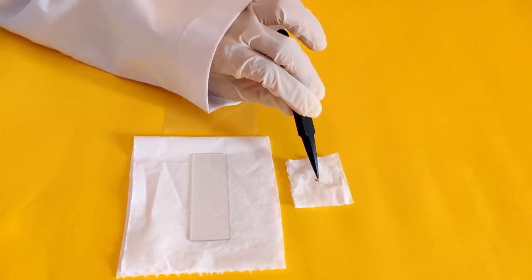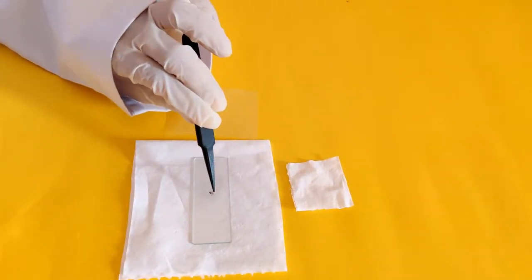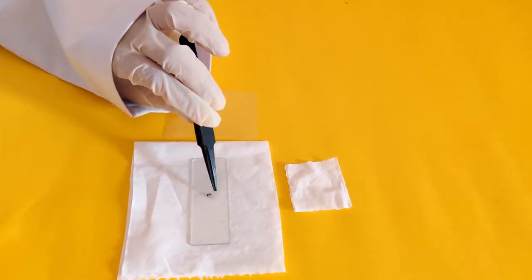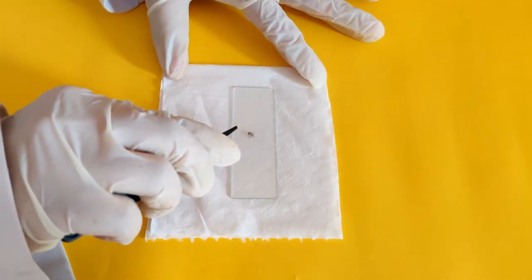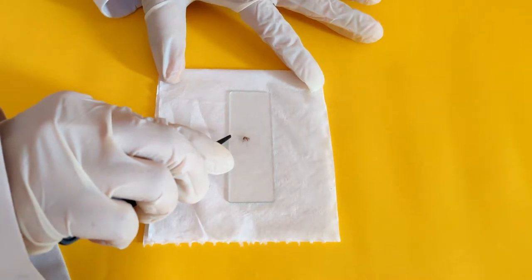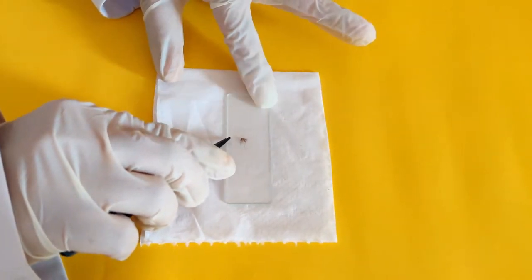Using the tweezers or a small forceps, gently place the mosquito on the mounting glass slide. Cover the mosquito with a cello tape or a transparent sticker such that the mosquito is encased fully.